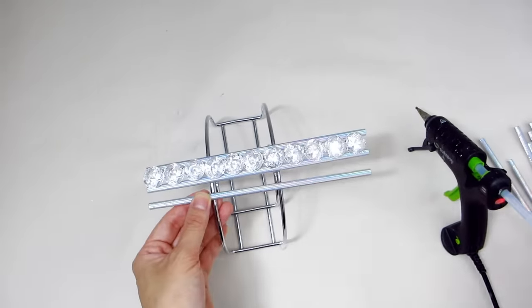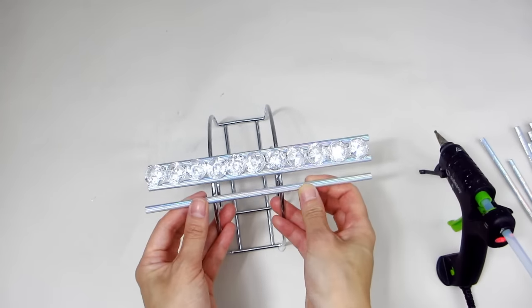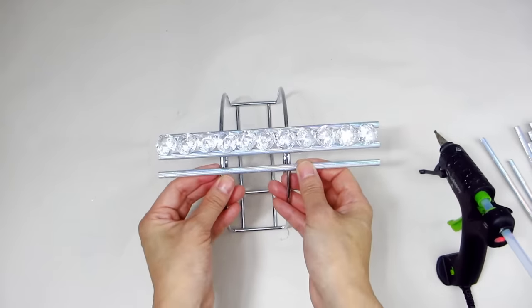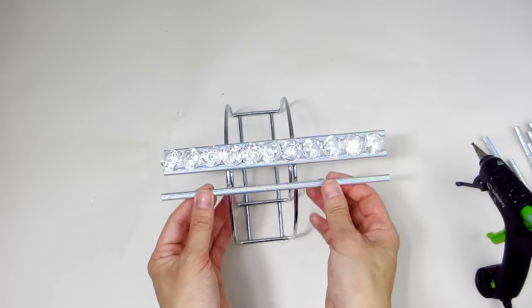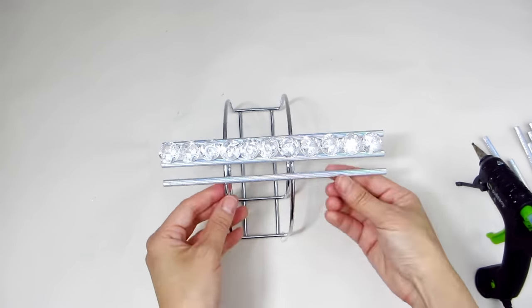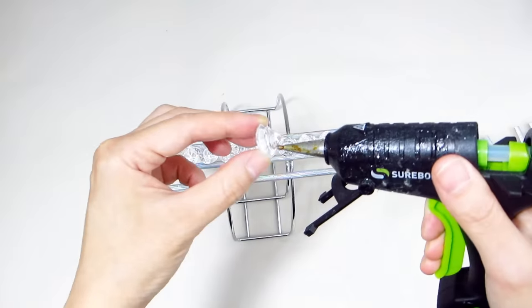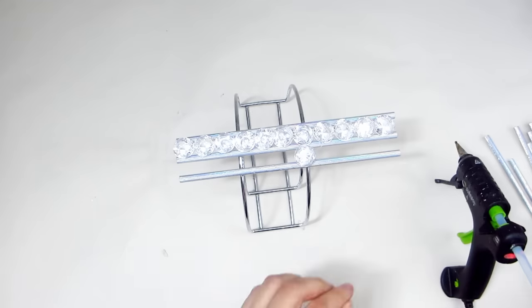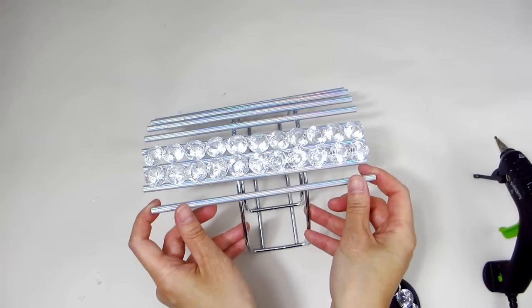Then repeat this process until the entire napkin holder is done. The strategy I felt that worked best for me was to apply all the remaining straws to the napkin holder first, each about a half inch apart. Then I could focus on adding the diamond gems.